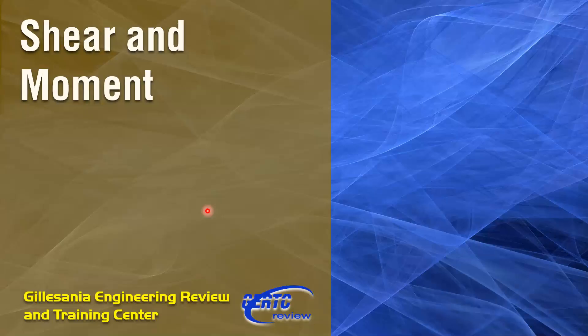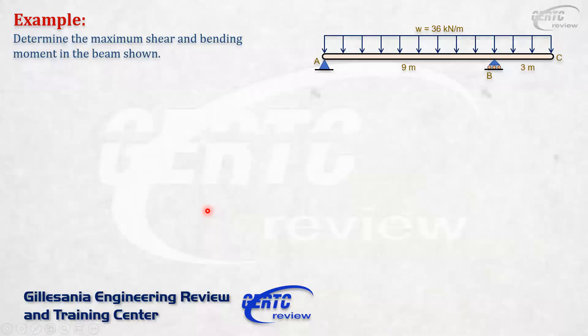So I hope this will help you with your preparation for board exams. A very simple problem. We have here a simple supported beam, total length 12 meters, supported at A and a roller at B. It has an overhang of 3 meters. The load is 36 kilonewtons per meter uniform load all throughout the span. We're going to determine the maximum shear and bending moment.